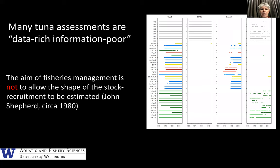Here is an example — I'm not entirely sure which stock this is — but you can see all the different data types, in particular lots of catch and lots of length frequency data. The column on the right is weight frequency data, which is even less informative about cohort strength than length frequency data. As John Shepherd noted, the aim of fisheries management is not to discover the stock-recruit relationship — you don't really want to drive the stock to low abundance to find out what it is.